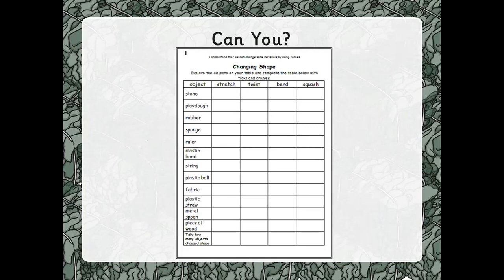What I'd like you to do today is to investigate whether or not it's possible to stretch, twist, bend and squash a variety of objects made of different materials. Around your homes and possibly your gardens, I'd like you to try and find the objects here that are in the table, which is in your home learning pack for you to complete. If you can't find all the objects, that's absolutely fine. You can either substitute them for something else or just leave that object and we'll explore it when we're back in school together.